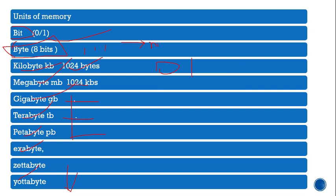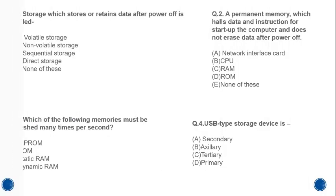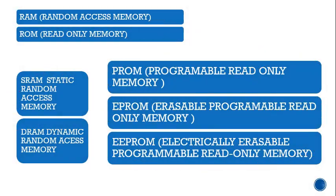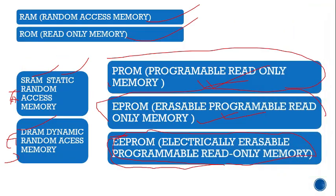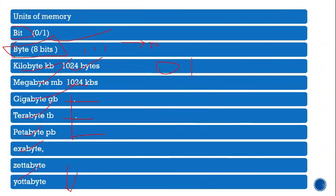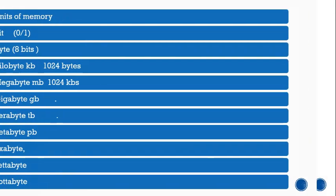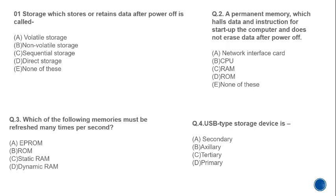Now we have covered memory, primary memory, secondary memory, their types, properties, and units. We will now move to MCQs on this topic. You will try the questions first yourself, then we will go through them together so you can see how many you got correct.